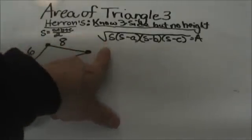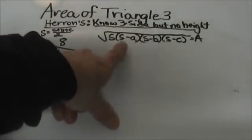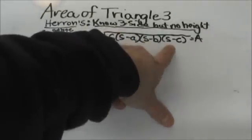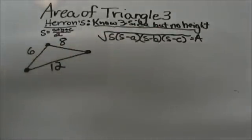To find the area you are going to take the square root of s times s-a times s-b times s-c and take the square root of that product.